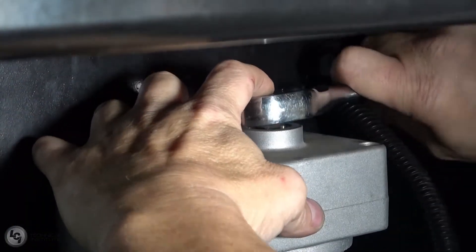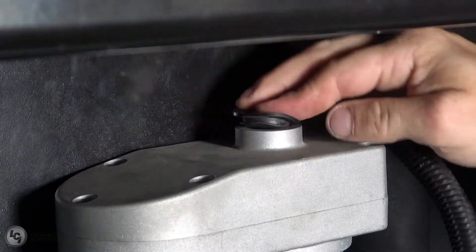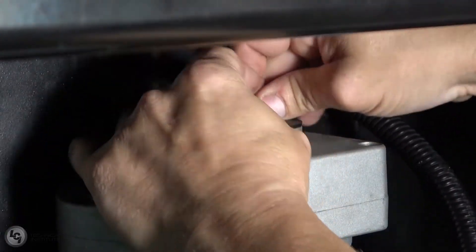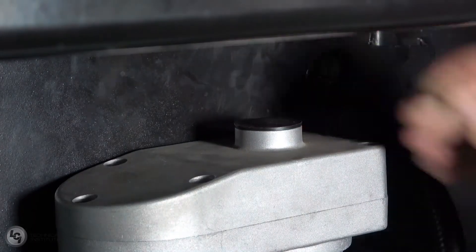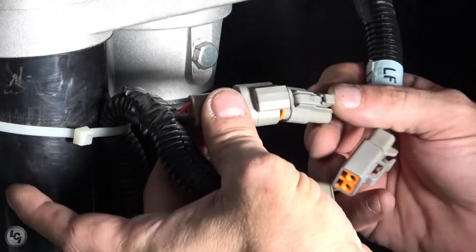Again, remember to replace the rubber plug to prevent dirt and debris from entering the system. Once the manual override is complete, plug the harness back into the jack.